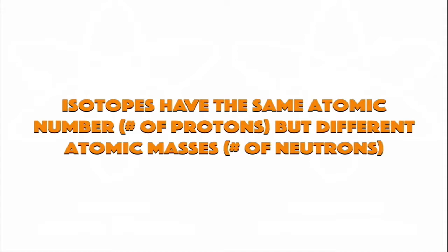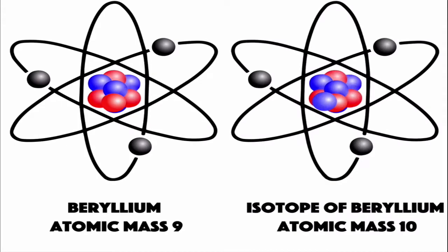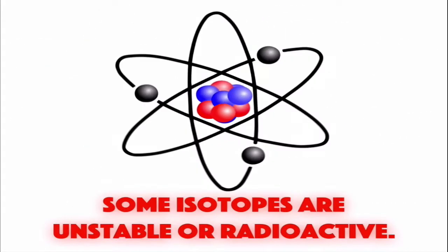There's another part to this that's shown on the periodic table. Every element can have an isotope or multiple isotopes. Isotopes have the same atomic number, which is the number of protons, but a different atomic mass, which is the number of neutrons. So in the case of beryllium with an atomic mass of 9, if there was an isotope of beryllium it would have an atomic mass of 10. It has one more neutron than it normally should. So an isotope is really just an extra neutron in the nucleus. But some isotopes are unstable or radioactive.